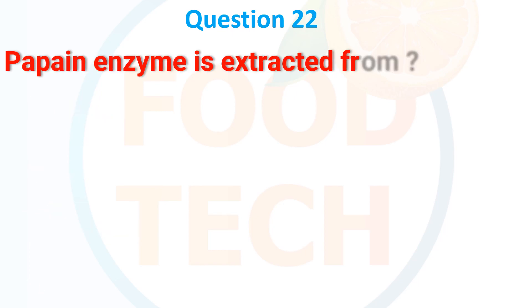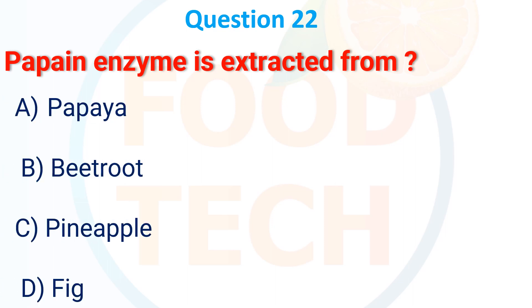Papain enzyme is extracted from: A. Papaya, B. Bitruth, C. Pineapple, D. Pig. The answer is A. Papaya.